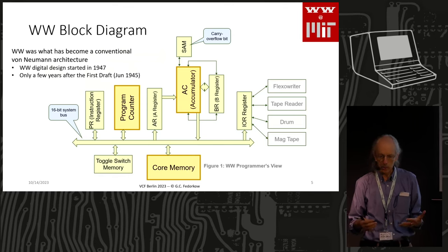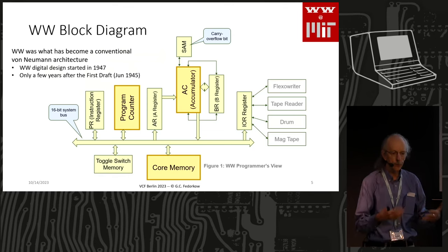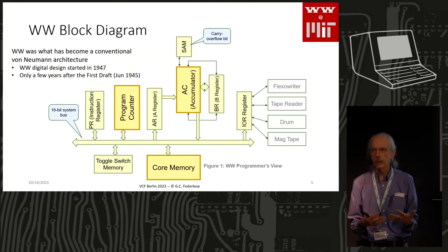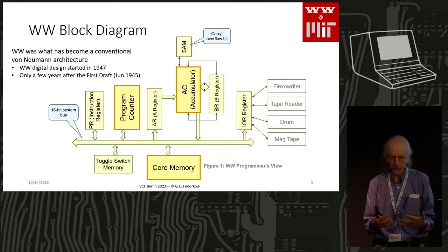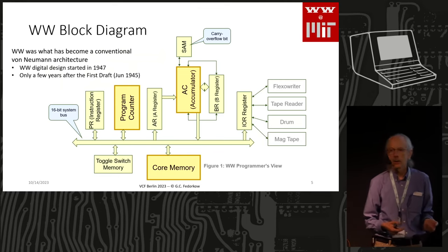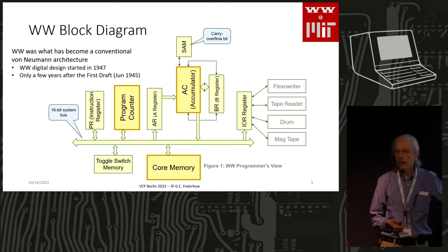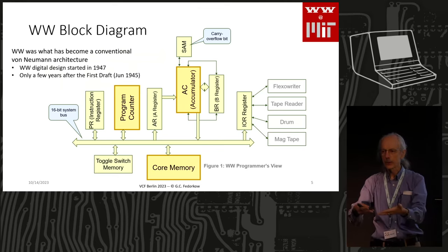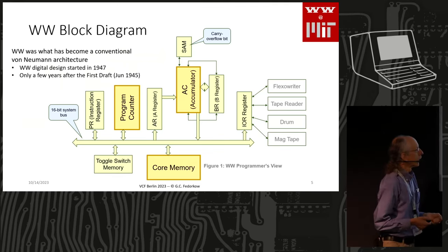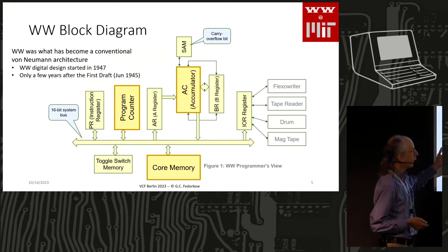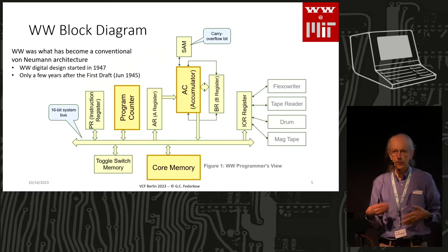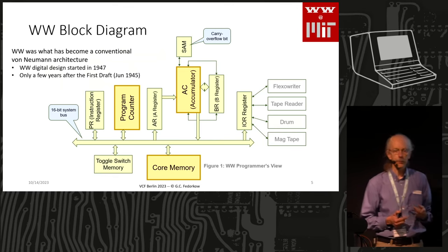Almost every computer we have today has lineage back to either IBM or DEC. The machine was a very straightforward von Neumann machine — von Neumann himself visited the Whirlwind site a number of times, as we've seen in the visitor log. The standard elements: memory, program counter, one accumulator, a second half of the accumulator for 32-bit numbers, and a boot ROM consisting of 32 words of toggle switches. You would literally toggle the boot ROM, push the start button, and it would jump to zero and run.